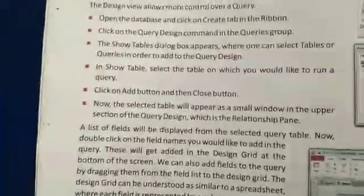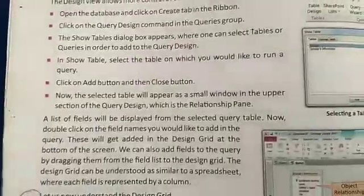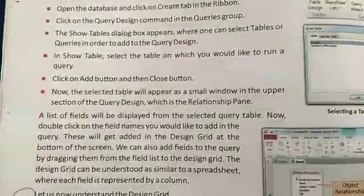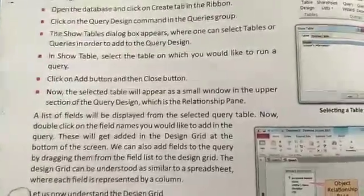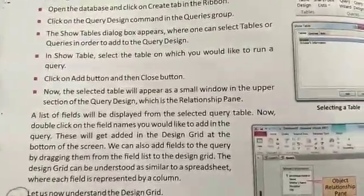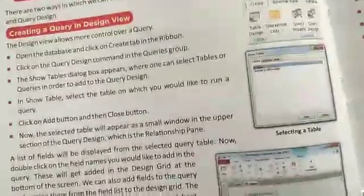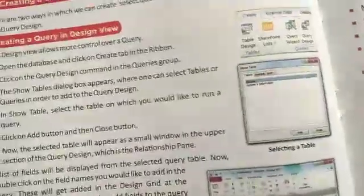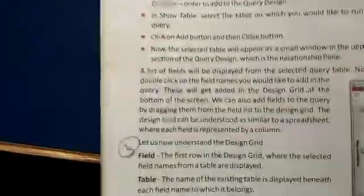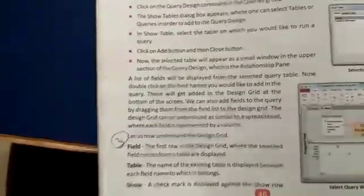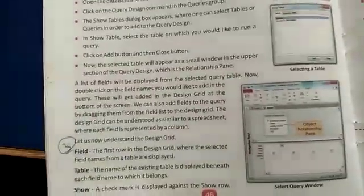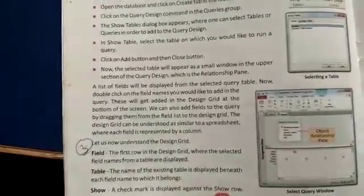The selected table will appear as a small window in the upper section of the query design, which is the relationship pane. A list of fields will be displayed from the selected query table.